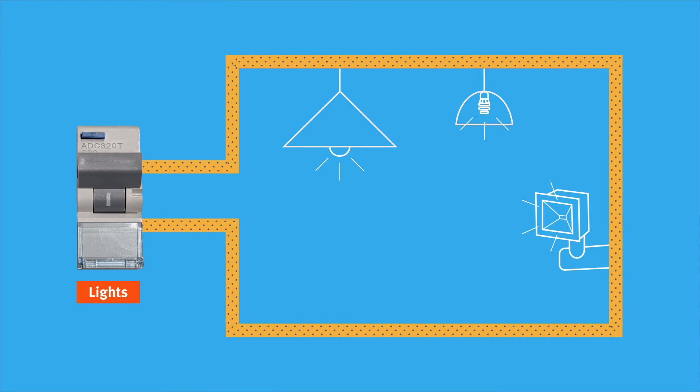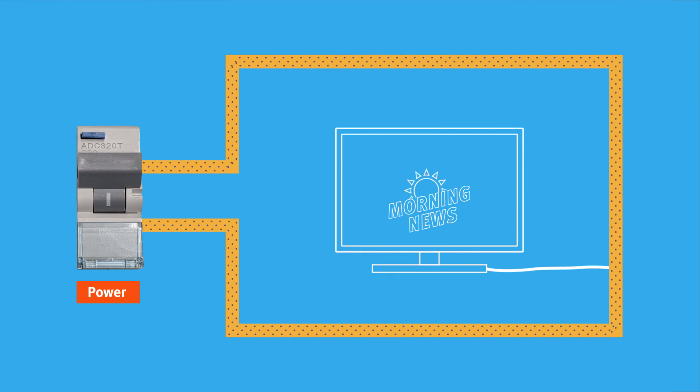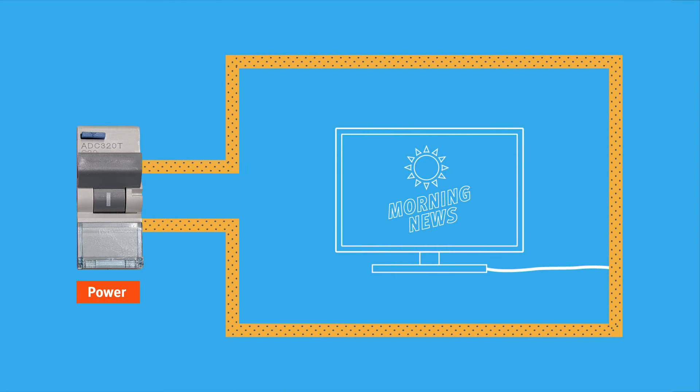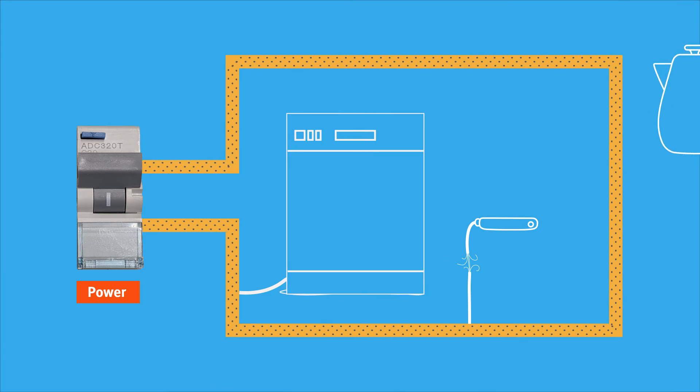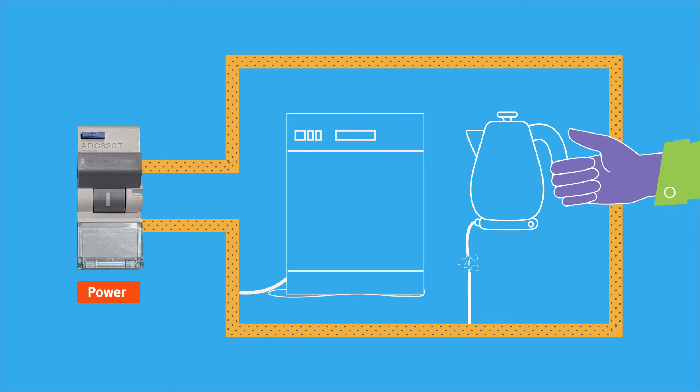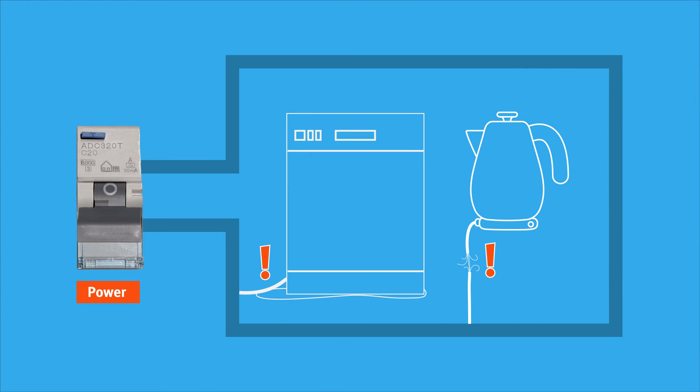Safety switches should be installed on all circuits to provide maximum protection for you and your family. Safety switches work by continuously monitoring the flow of electricity. They turn off the power instantly when they detect an unsafe situation, saving you in a split second.